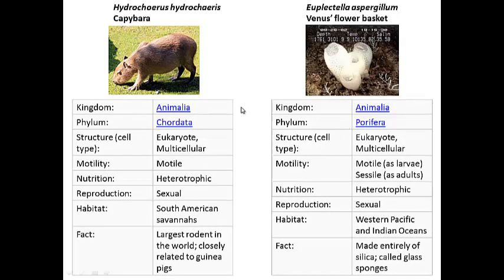My third and fourth organisms are both in Kingdom Animalia. One is a capybara, the world's largest rodent, which is found in Phylum Chordata.